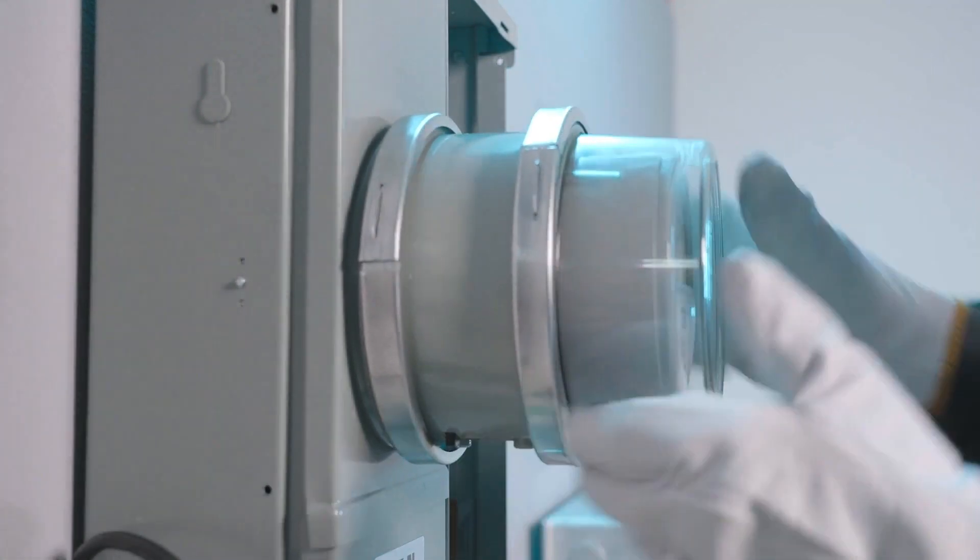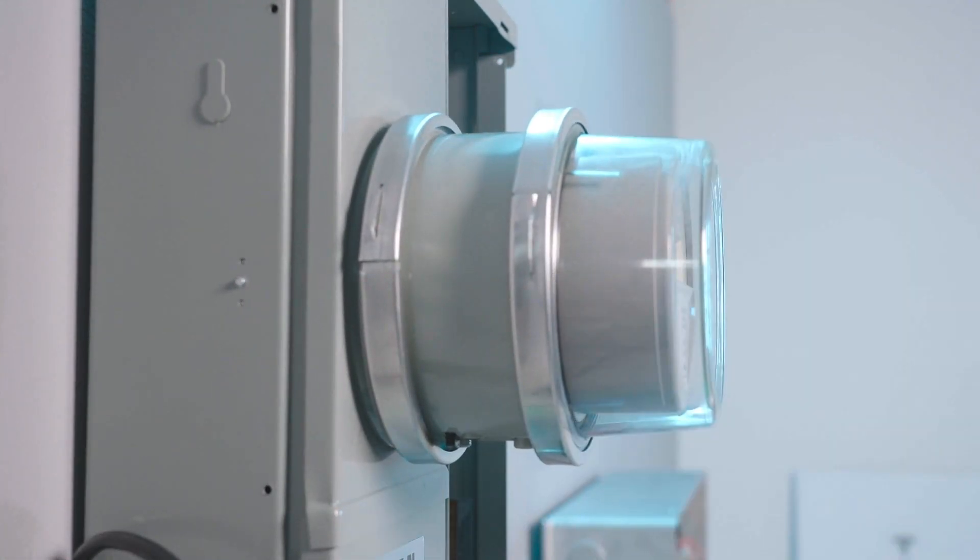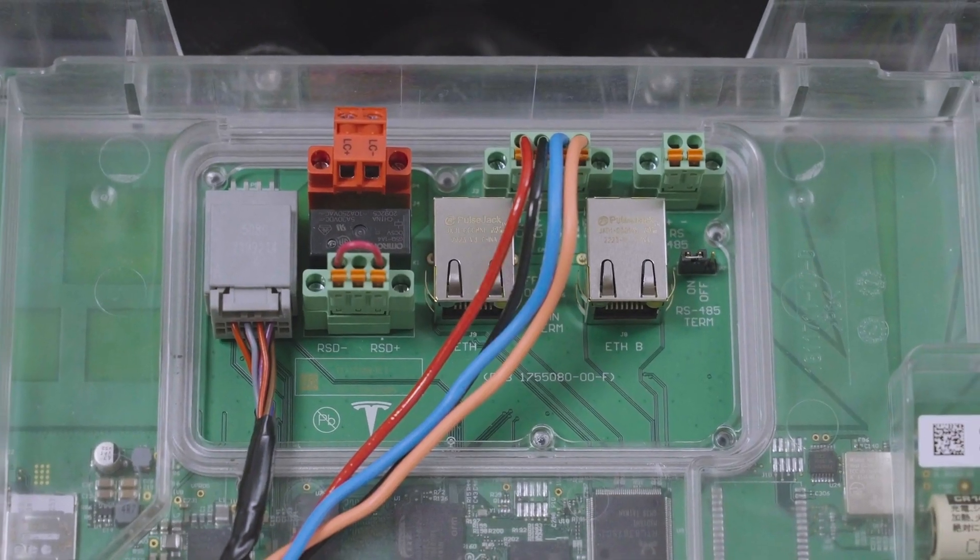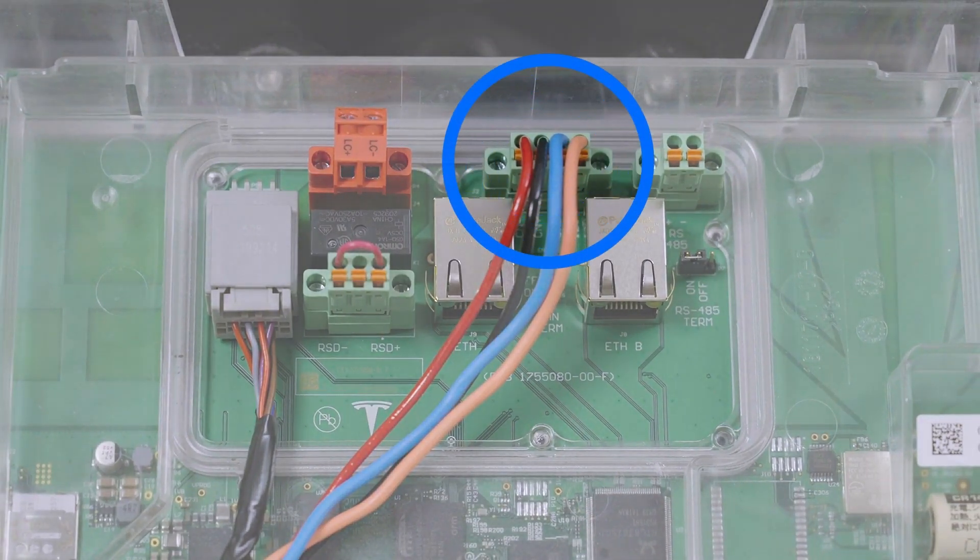Perform a pull test to ensure Backup Switch feels secure in the meter panel. If Backup Switch does not feel secure, verify that the ceiling rings were installed in the correct orientation. Backup Switch is now installed and ready for wiring.